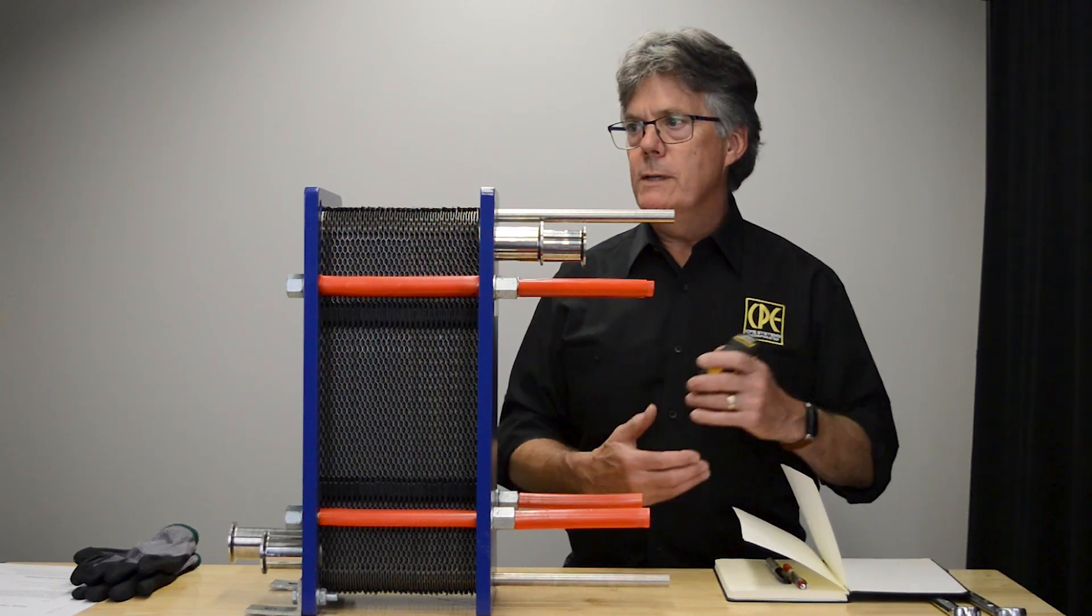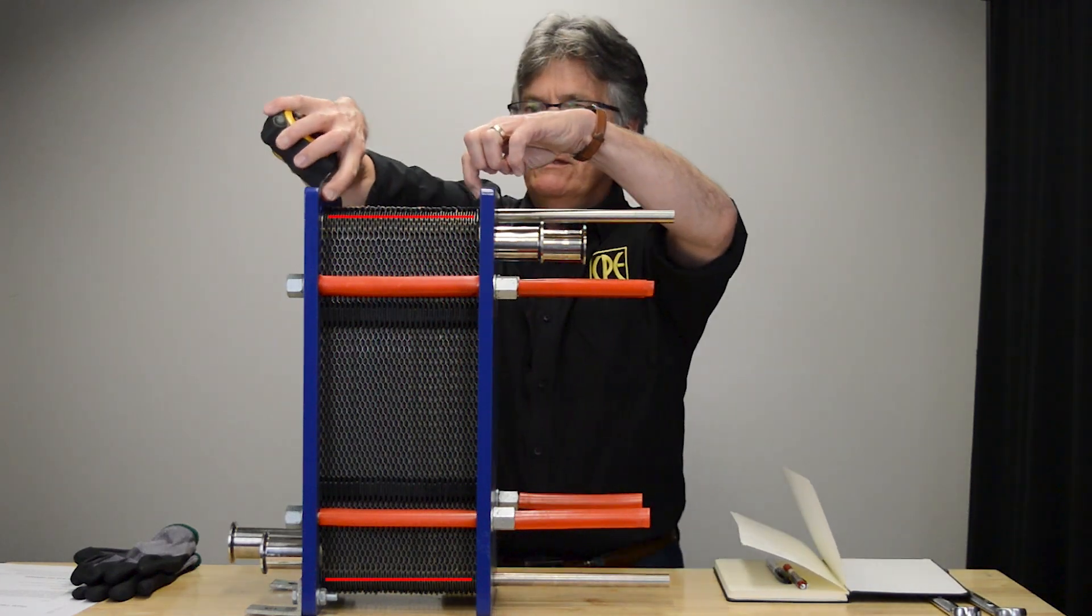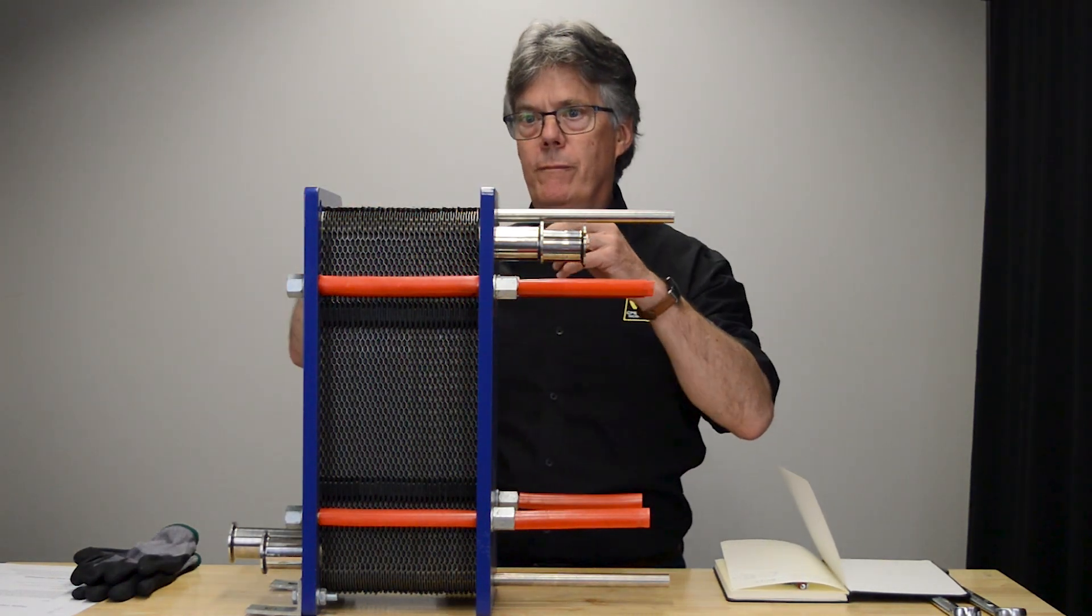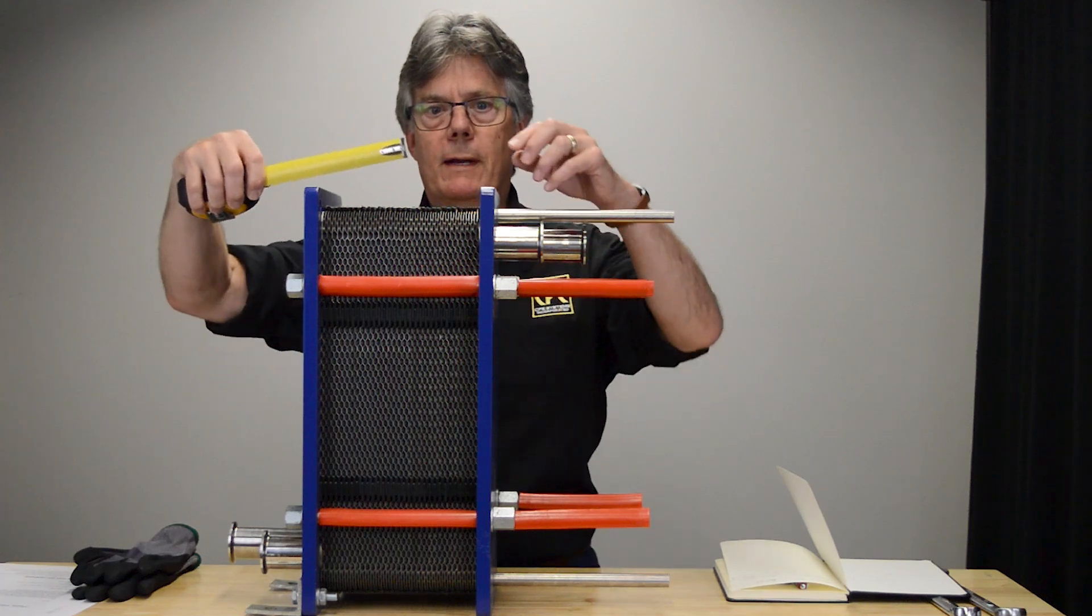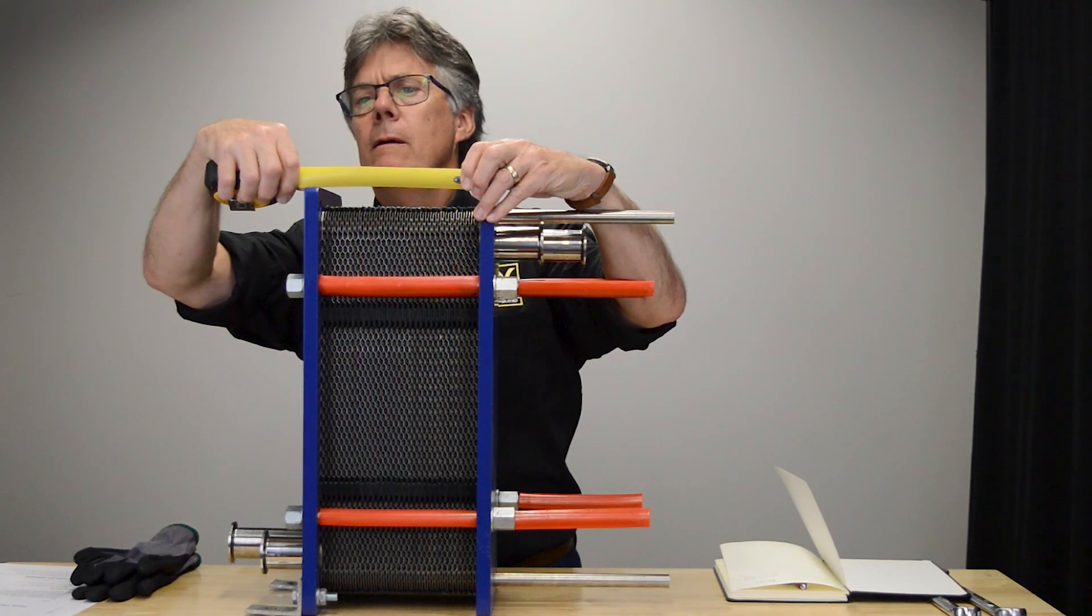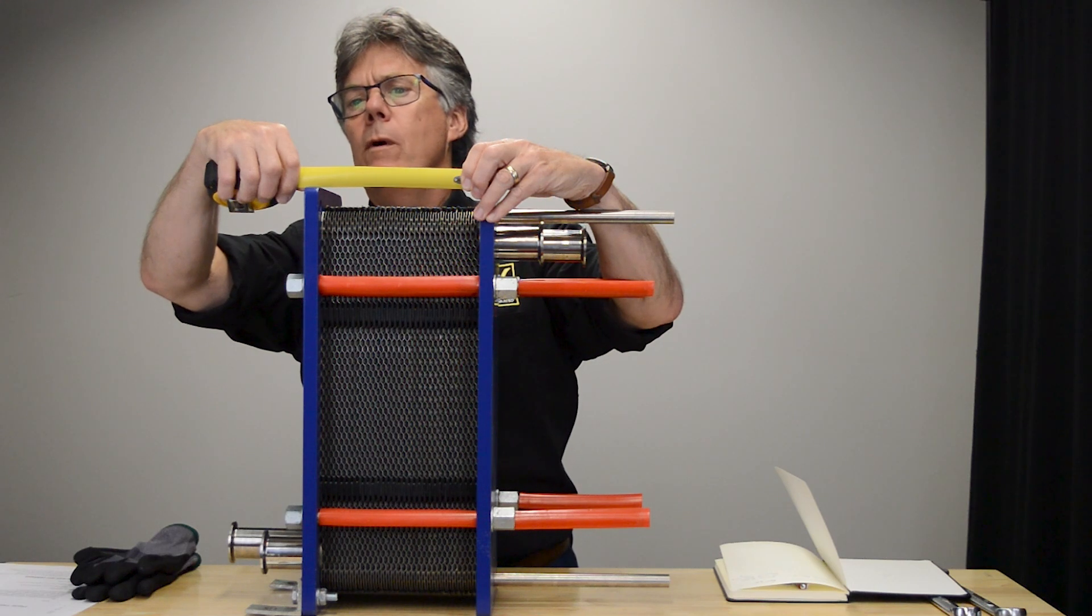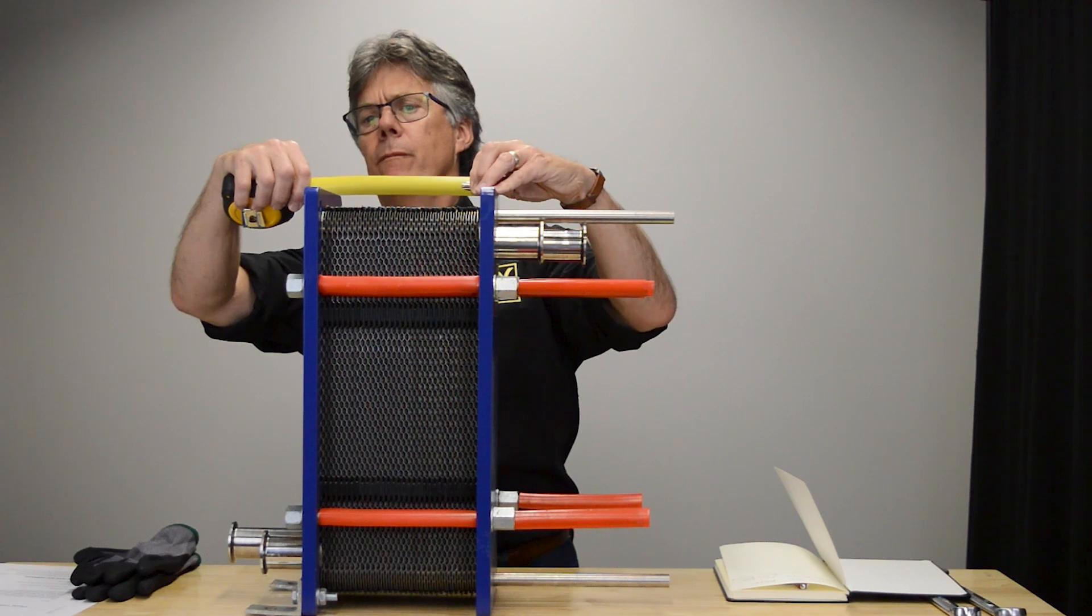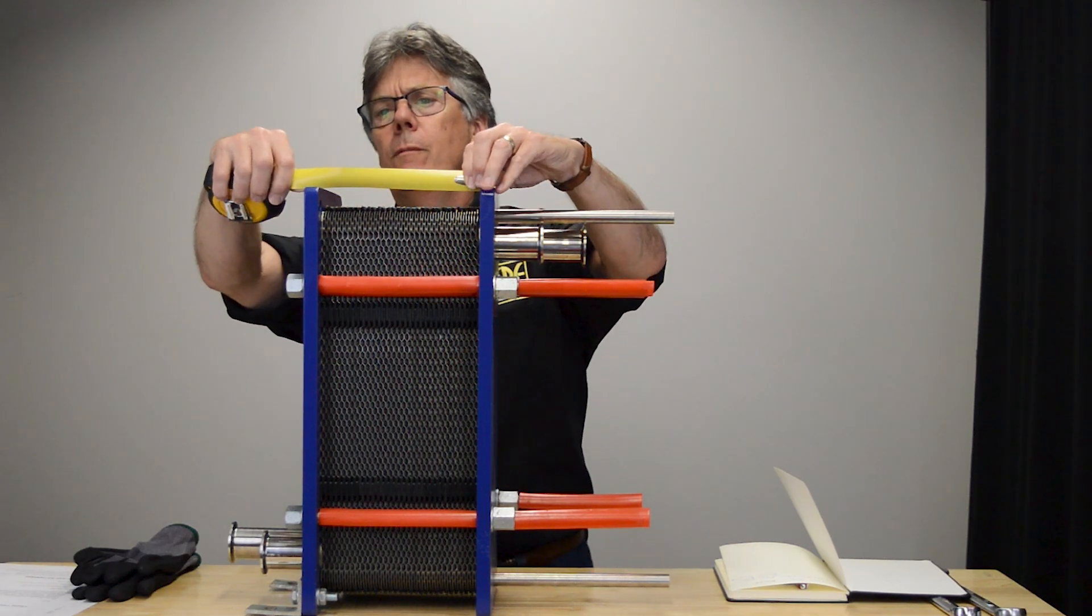The first thing I'm going to do before I take it apart is measure this distance in here, it's the A dimension. It's really important because you need to put it back to be exactly the same when you reassemble. So I'll just use my tape and it is 7 and 1/8 inches, 7.125 inches.